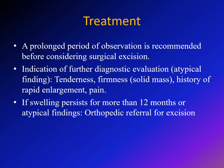Consider obtaining further imaging such as MRI if you see anything abnormal — for example, if the swelling is tender or firm (suggesting a solid mass rather than a Baker cyst), if there is a history of rapid enlargement where the swelling doubled or tripled in size over two to three months, or if there is marked pain. The swelling itself should be painless; if it is painful and tender on palpation, get more imaging studies.